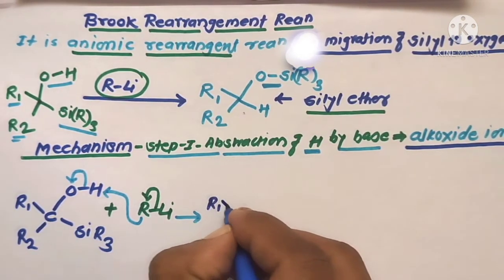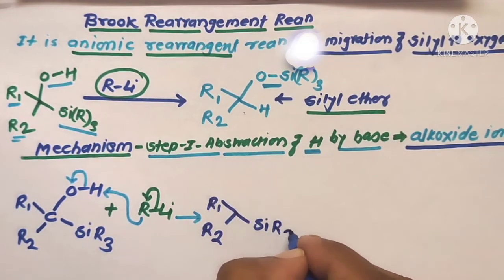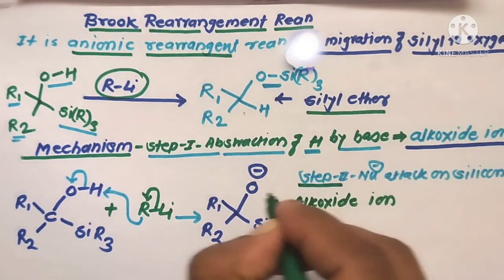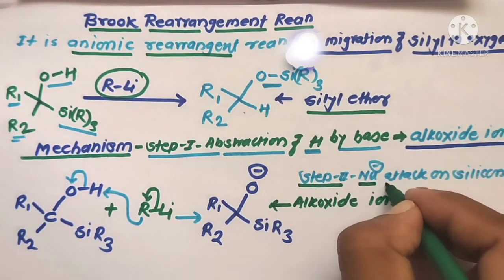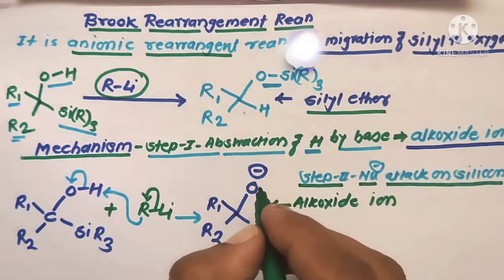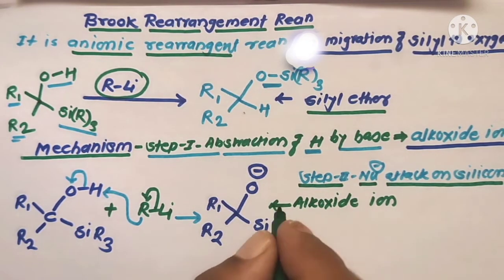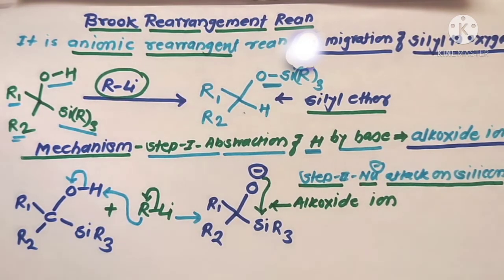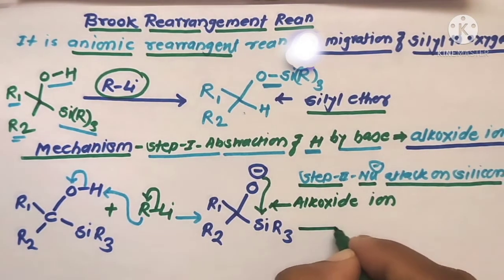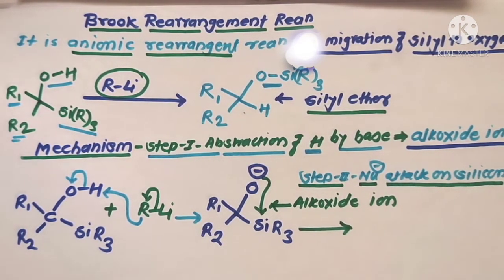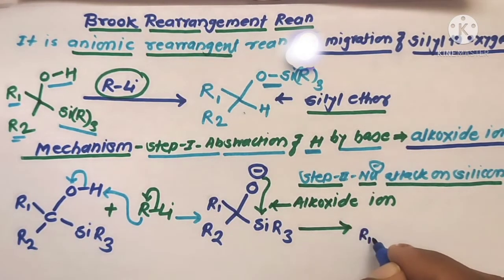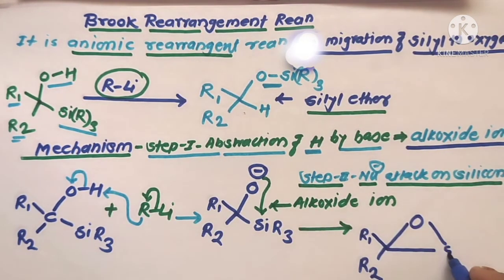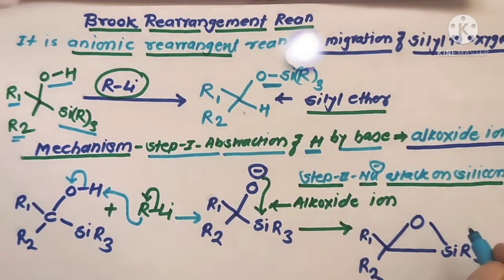The alkoxide ion formed acts as a nucleophile. In step two, nucleophilic attack takes place — the oxygen's non-bonded pair of electrons, being electron-rich, acts as a nucleophile and donates electrons toward the electron-deficient silicon atom. This forms a three-membered cyclic pentacoordinate molecule, with R1 and R2 groups and silicon bearing a negative charge along with the three R groups.